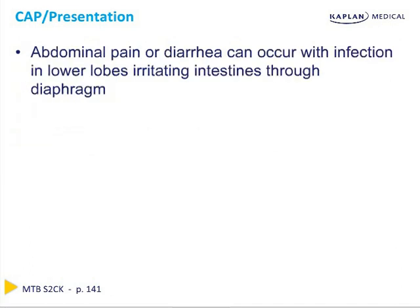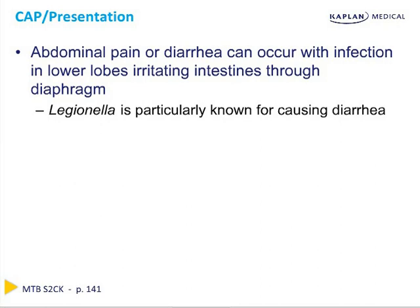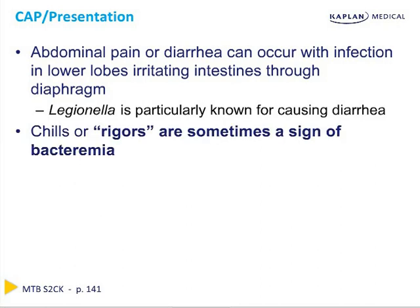In some types of pneumonia, the clinical presentation can also include GI symptoms, including abdominal pain or diarrhea. This is thought to happen because the lower lobes can irritate the intestines through their close contact with the diaphragm. Legionella is particularly well known for this. Chills or rigors are also sometimes associated with pneumonia and can be a sign of bacteremia. Usually, Strep pneumo is going to be the cause of pneumonia most often associated with bacteremia.